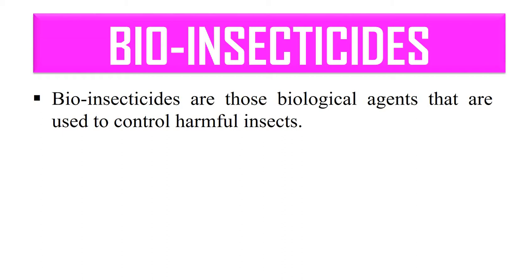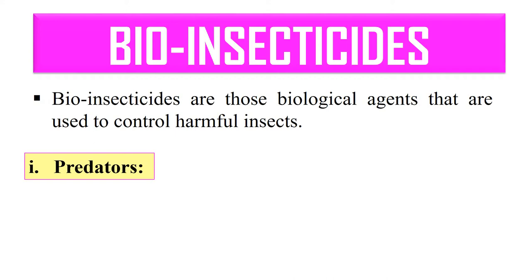Bio insecticides generally include predators — species which feed upon another. In the case of bio insecticides, harmful insects or plant pests are controlled by introduction of their natural predators, which feed upon these harmful insects and ultimately control their population. That's why predators act as bio insecticides.